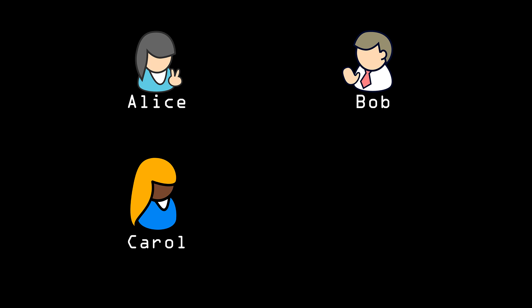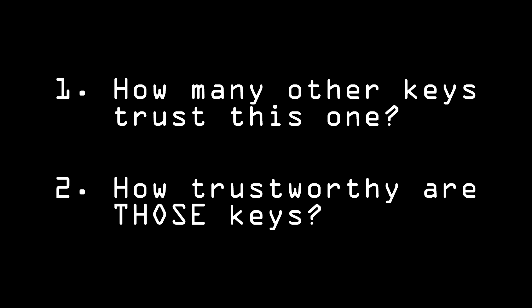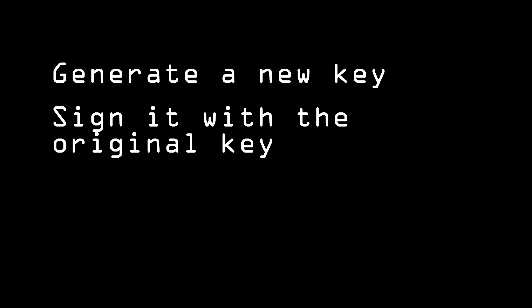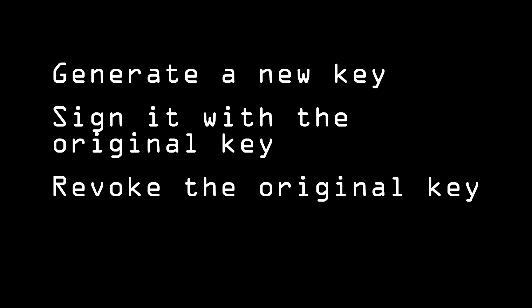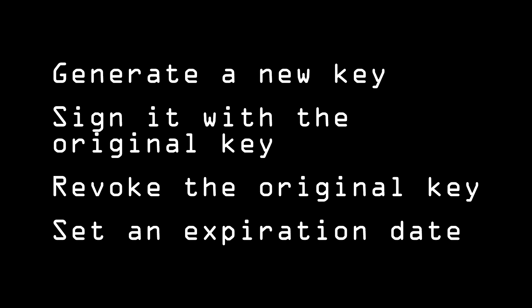This is called a web of trust. A key can be trusted by answering two questions: 1. How many other keys trust this one? And 2. How trustworthy are those keys? If Carol is sloppy about which keys she trusts, Alice and Bob might not trust keys signed by her that much. Also, Alice's trust of Bob means that she'll accept Bob's evaluation when he trusts Carol's key at a lower level or distrusts Eve's key entirely. Bob can also generate a new key any time he wants and sign it with his old key to let people know it's genuine. He can then revoke the older key. Keys can also be set to expire at a certain date.